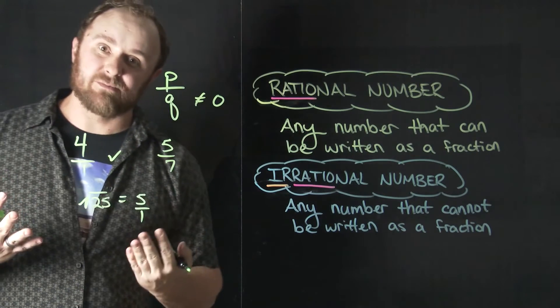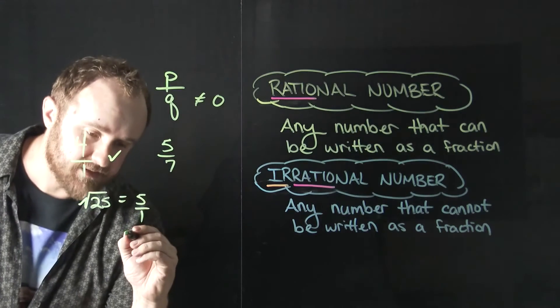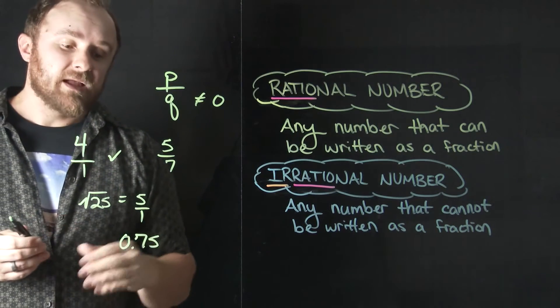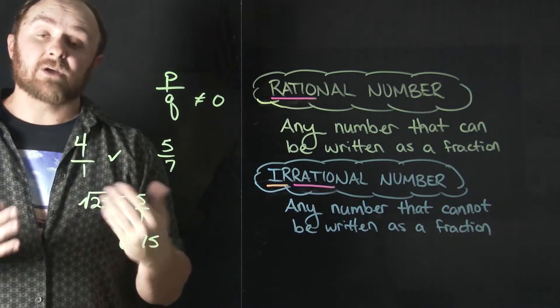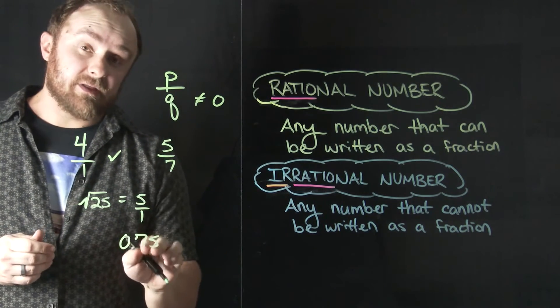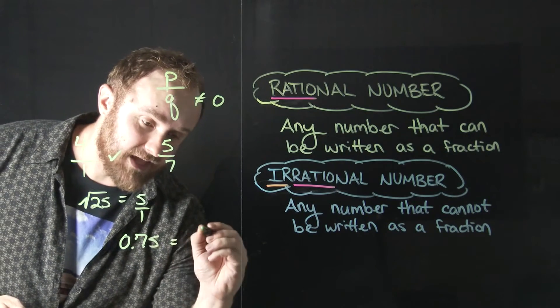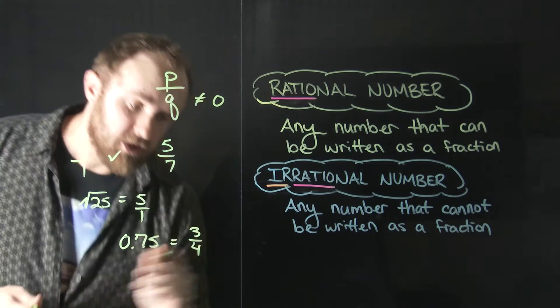And then we can look at decimals, numbers that have decimals in them. For example, the decimal 0.75. 75 hundredths is also a rational number. I know that this, and a lot of us know that if we have three quarters, we have 75 cents. So that equals the fraction three over four.